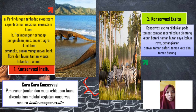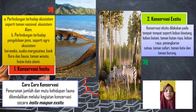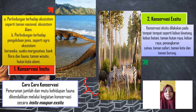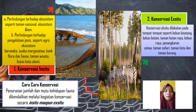Ex-situ conservation is done by maintaining and developing animals and plants outside their natural habitat. Because of this, the failure rate of ex-situ conservation is very high, because many animals and plants are still unable to adapt directly to the surrounding environment.